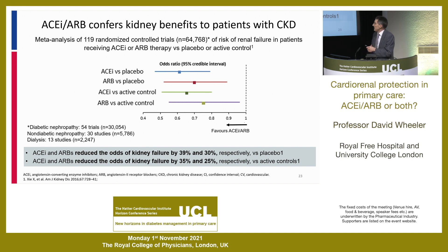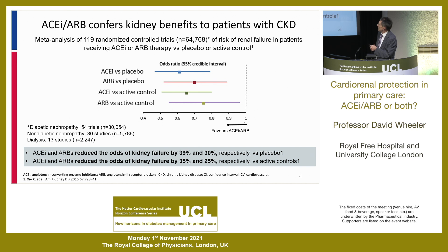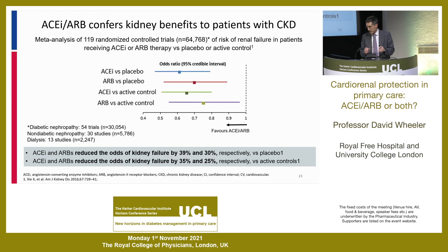There is now a meta-analysis of all these studies — the totality of data analysed about four years ago — looking at patients with CKD in trials comparing ACEs to placebo, ARBs to placebo, or ACEs and ARBs to other active therapies. All of the point estimates and 95% confidence intervals favour the ACE or ARB over the comparator. ACEs and ARBs reduce the odds of kidney failure by 39% and 30% respectively versus placebo, and 35% to 25% versus active control. There is very little doubt that using ACEs and ARBs over other agents benefits these patients in terms of slowing their kidney disease.